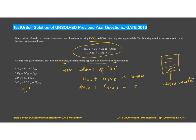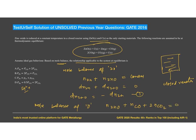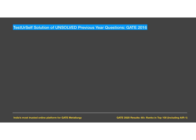Differentiating, we get d(n_ZnO) = -d(n_Zn), which we call equation one. Now for mole balance of oxygen: one mole of oxygen is present in zinc oxide, one mole in carbon monoxide (CO), and two moles in carbon dioxide (CO₂). This is also constant, so differentiating: d(n_ZnO) + d(n_CO) + d(n_CO₂) = 0.